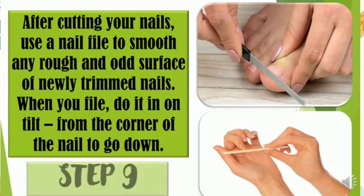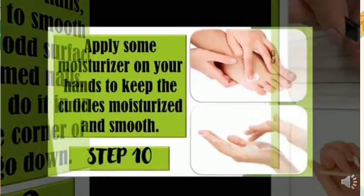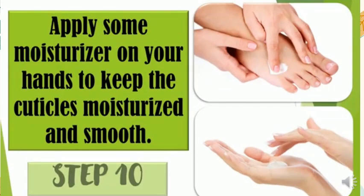Step 9 — after cutting your nails, use a nail file to smooth any rough and uneven surface of newly trimmed nails. When you file, do it on a tilt from the corner of the nail going down. Step 10 — apply some moisturizer on your hands to keep the cuticles moisturized and smooth.